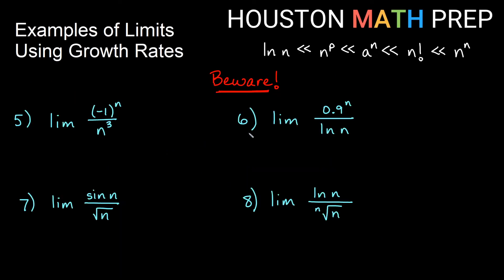We need to be careful not to be deceived. The expression (−1)^n may look like exponential growth, but it is not — it just alternates signs: −1, 1, −1, 1... We're not getting infinite growth. The bottom n^p is getting infinitely large, and since we keep bouncing positive and negative but the terms all get close to zero, this limit is zero. Don't be fooled: by exponential growth we mean something approaching an infinite value, which (−1)^n does not do.